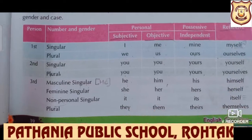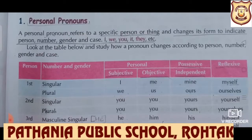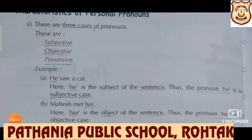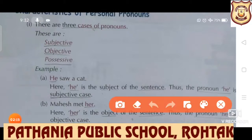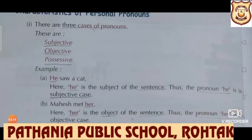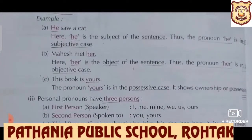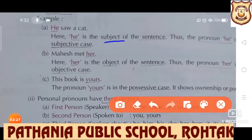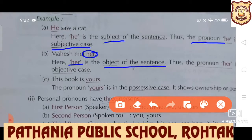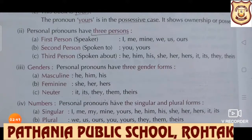Now we will understand how personal pronoun works as subjective case, objective case, and possessive case. There are three cases of pronoun: subjective, objective, and possessive. Simple concept with simple examples. 'He saw a cat' — here 'he' is the subject of the sentence, so the pronoun 'he' is in the subjective case. 'Mahesh met her' — here 'her' is the object of the sentence, so the pronoun 'her' is in the objective case. 'This book is yours' — 'yours' is the possessive case, which shows ownership or possession. That's why it is called possessive case.